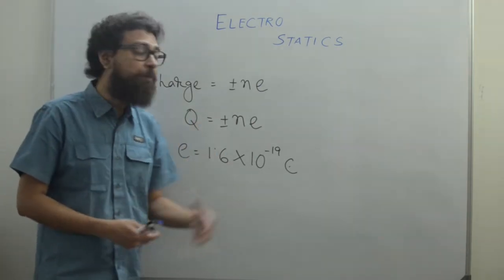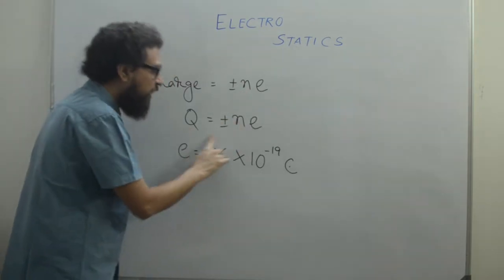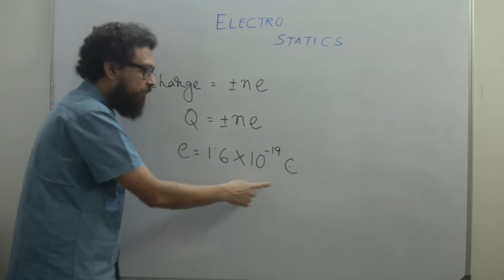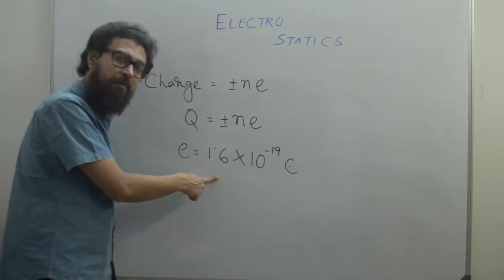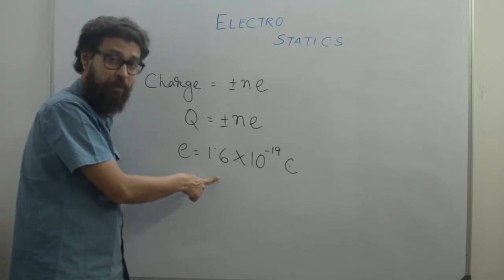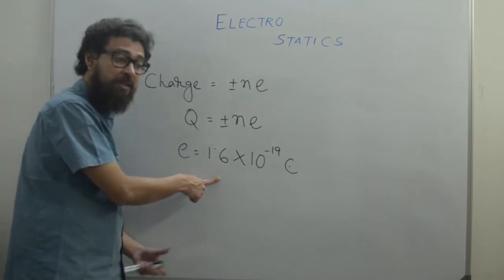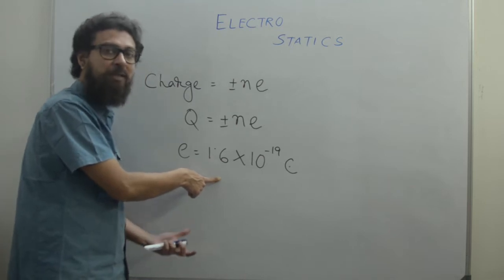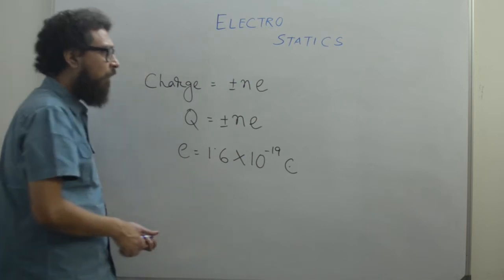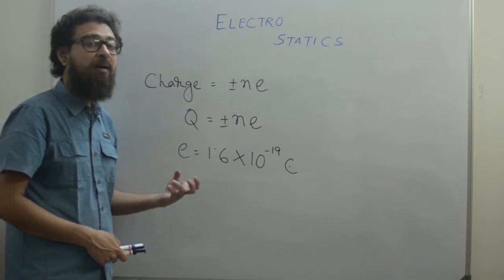All these bodies should have charge that is an integral multiple of the electronic charge. Any charge that exists in nature should be an integral multiple of the electronic charge, which is equal to 1.6 × 10⁻¹⁹ Coulomb. We will talk about Coulomb — he is the first who actually thought about this particular section of physics long back.